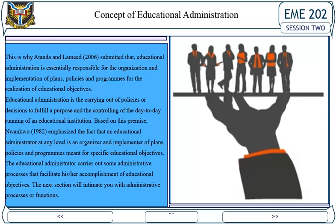These resources are carefully and systematically used for the achievement of educational objectives. This is why Andun (2006) submitted that educational administration is essentially responsible for the organization and implementation of plans, policies and programs for the realization of educational objectives. Educational administration is the carrying out of policies or decisions to fulfill a purpose and the controlling of the day-to-day running of an educational institution.